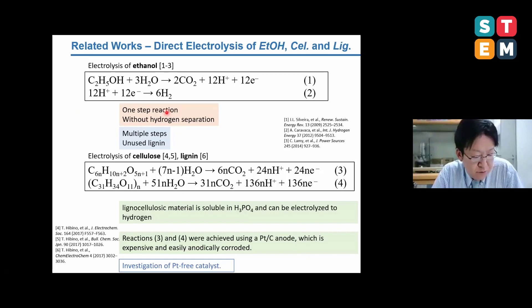Here I'd like to introduce related works using biomass for hydrogen production. If we can get ethanol from biomass, hydrogen can be produced from ethanol following these simple equations. But as I mentioned, it requires time, energy, and cost to get ethanol from biomass. The other technique to get hydrogen from biomass is direct electrolysis of the cellulose and lignin from the biomass. The reaction equation of direct cellulose electrolysis is shown in these equations.